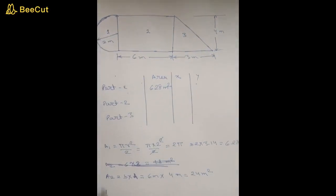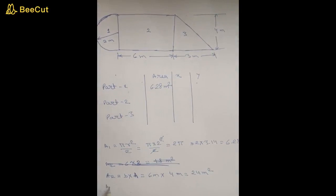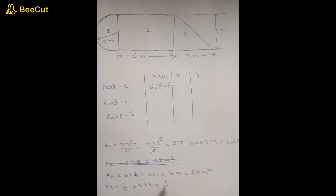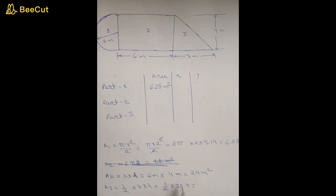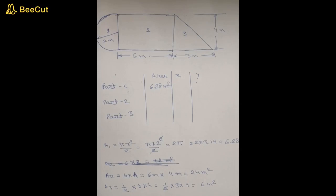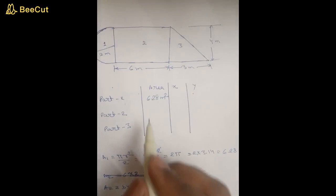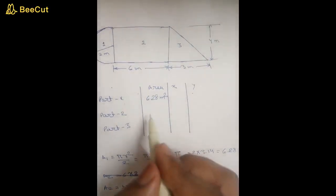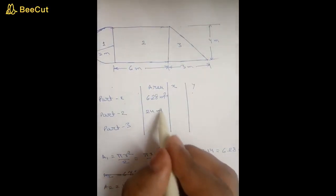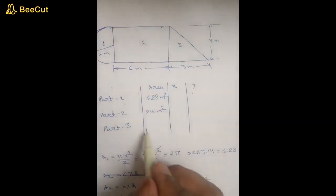For part 3, it is a right-angle triangle, so A3 will be half times breadth times height: half into 3 into 4, which equals 6 square meters. So we have found all areas: 6.28 square meters, 24 square meters, and 6 square meters.